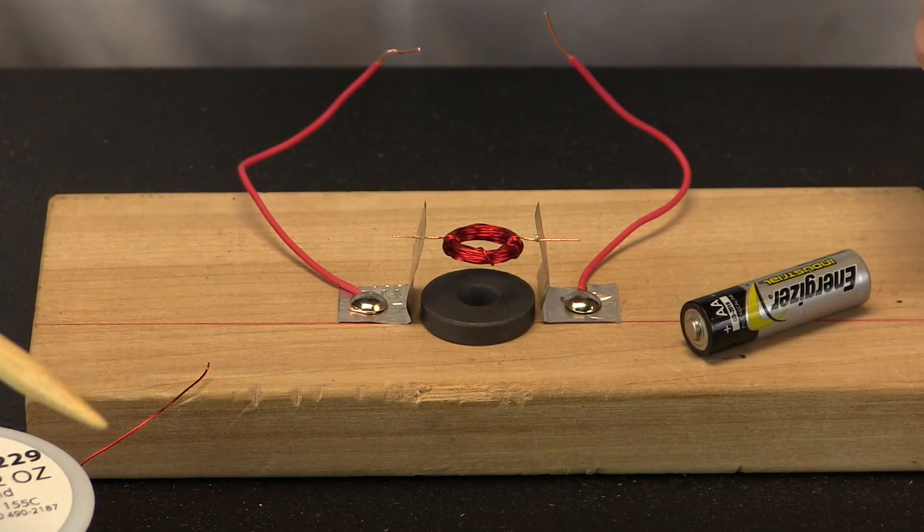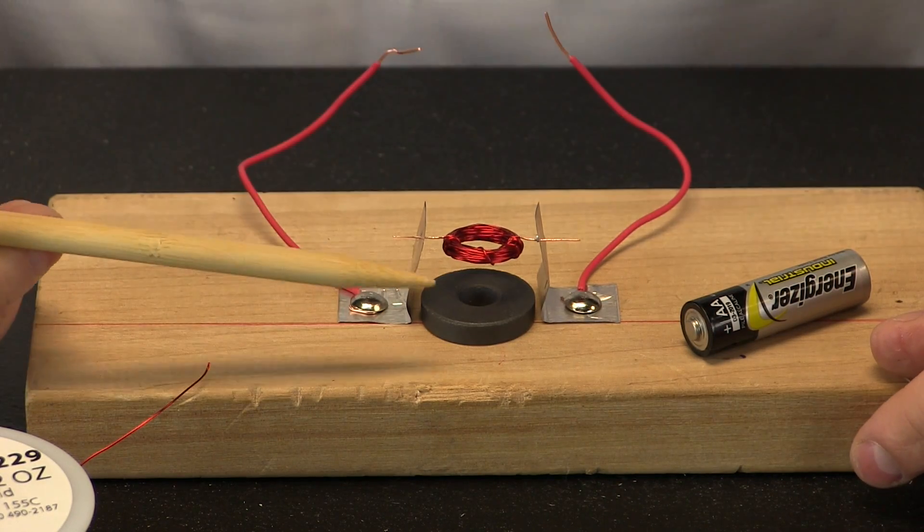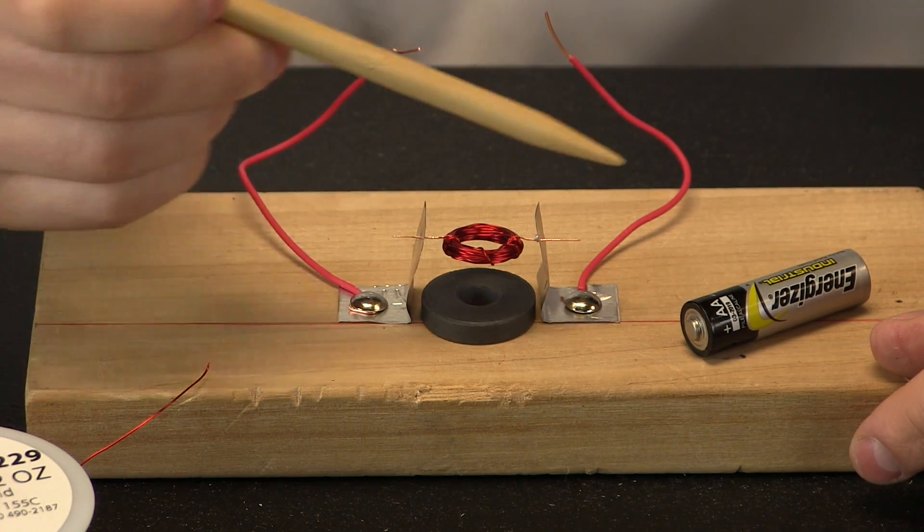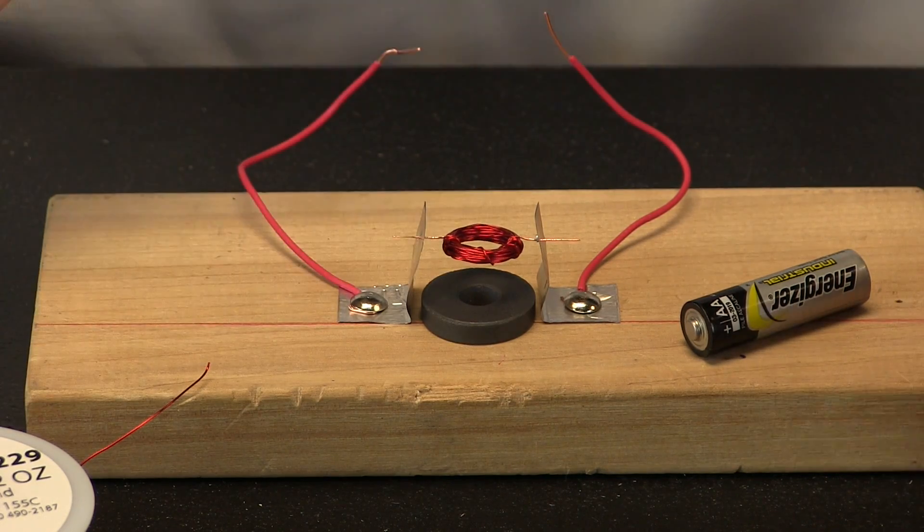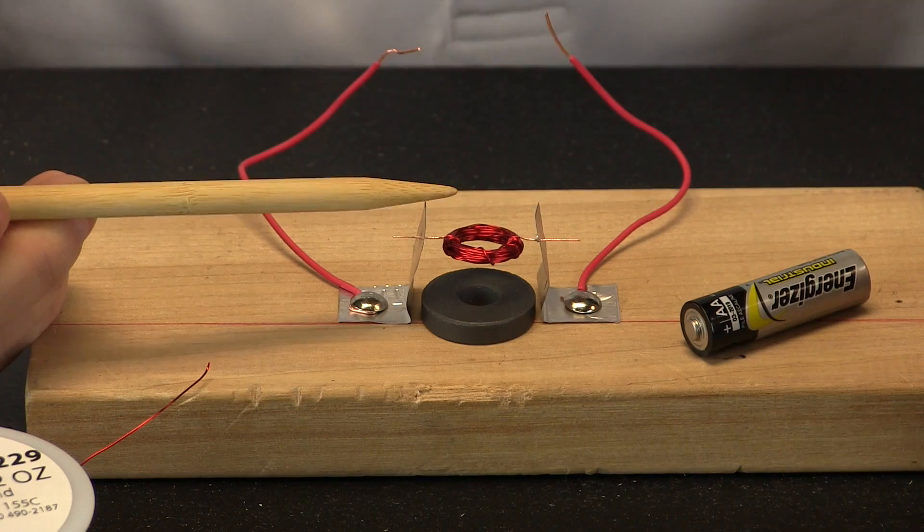Now remember a force is a push or a pull. So when I have the force of the magnet working with the force of the electricity going through that wire, all that pushing and pulling makes this coil of copper spin.